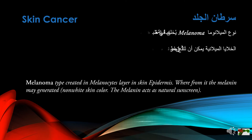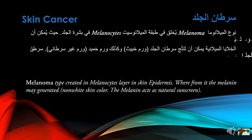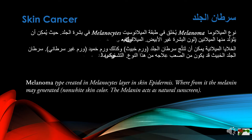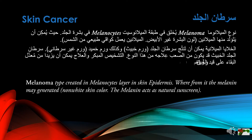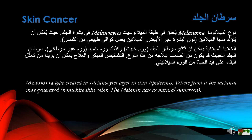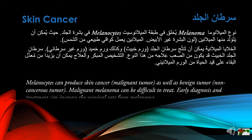The melanoma type is created in the melanocytes layer of the skin epidermis, where melanin may generate non-white skin color. Melanin acts as a natural sunscreen. Melanocytes can produce skin cancer — both malignant tumors and benign, non-cancerous tumors. Malignant melanoma can be difficult to treat, but early diagnosis and treatment can increase the survival rate.